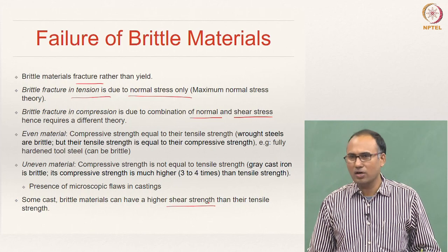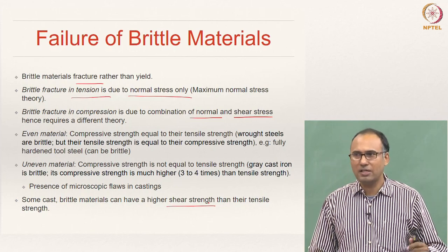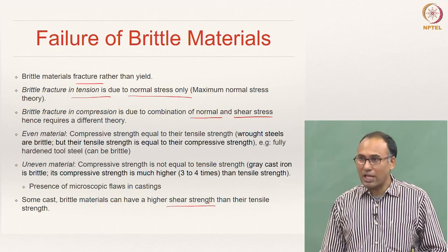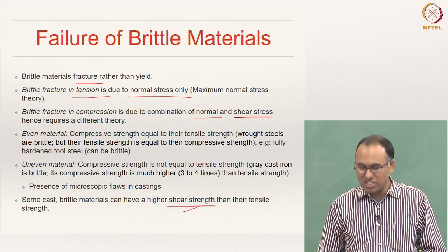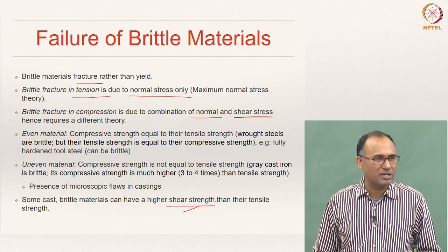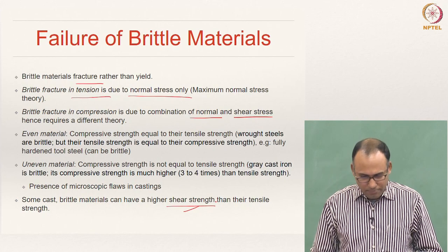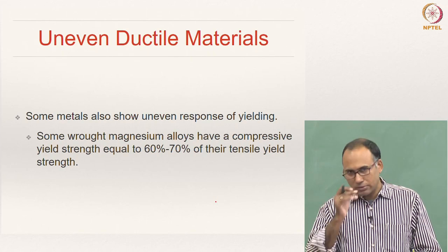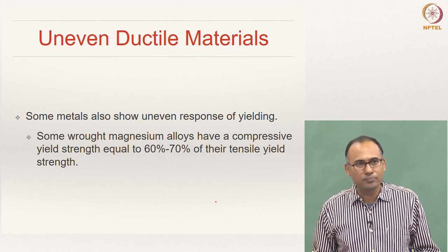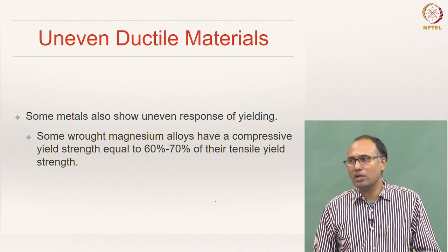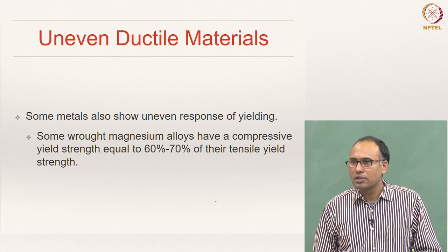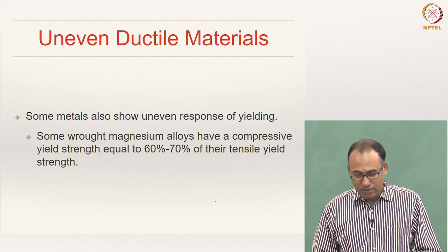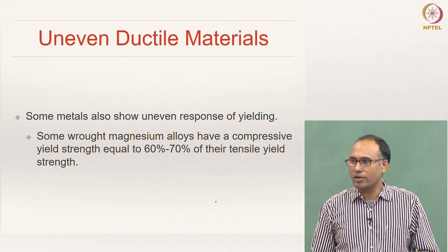For ductile even materials, the shear strength is one half of the tensile strength. However, some special materials can actually show higher shear strength than tensile strength. You also need to know that ductile materials can also have uneven strengths on the tension side and the compression side. Sometimes your compressive yield strength can be larger or smaller than the tensile yield strength.